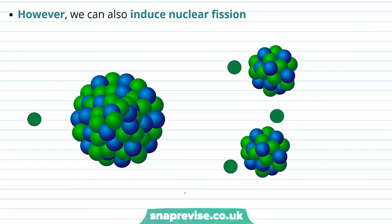However, we can also induce nuclear fission, and we do this by adding a neutron in order to induce this large nucleus to split into two smaller nuclei.